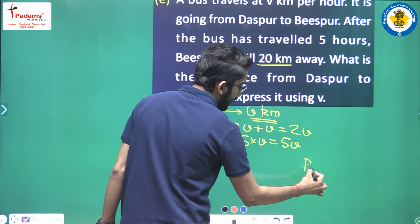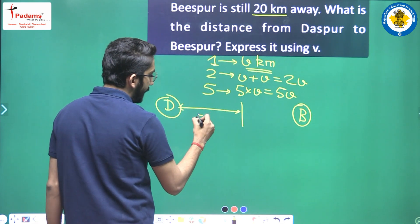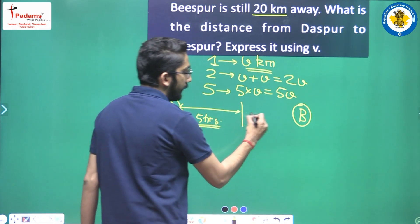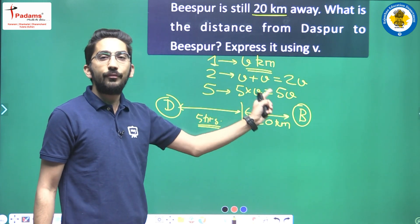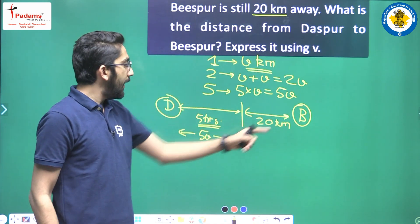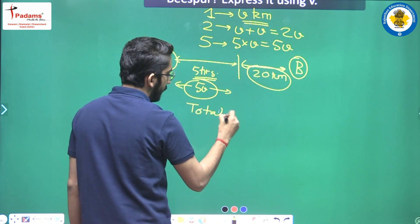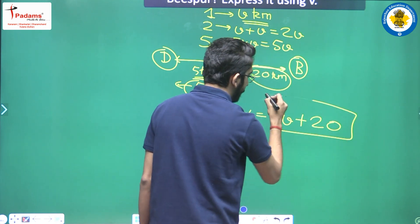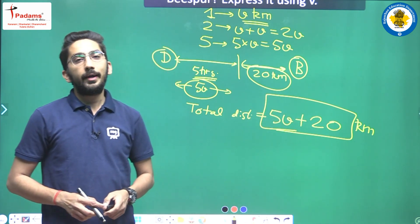If Daspur is here and Bispur is there, the bus has already traveled five v kilometers in five hours, and the remaining distance to Bispur is twenty kilometers. So the total distance from Daspur to Bispur is five v plus twenty kilometers.